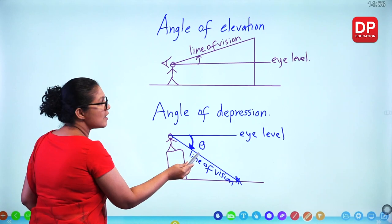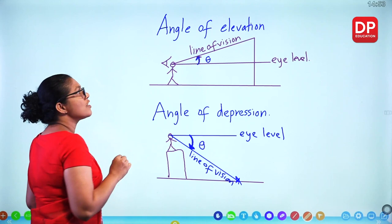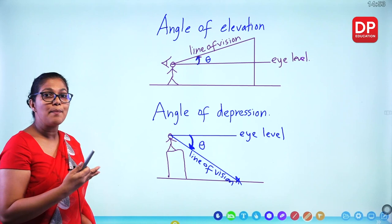If the angle is theta measured upward from the eye level, that's the angle of elevation. If measured downward, that's the angle of depression. In scale diagrams in the vertical plane, these two angles are very important.